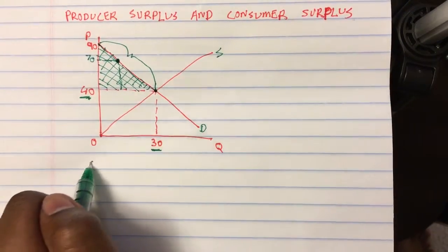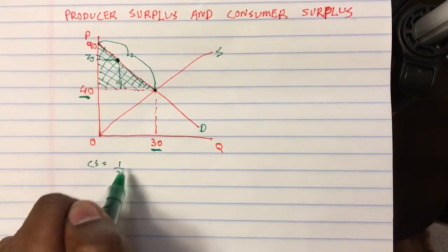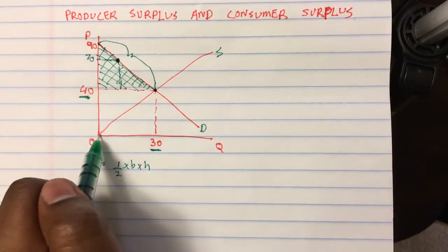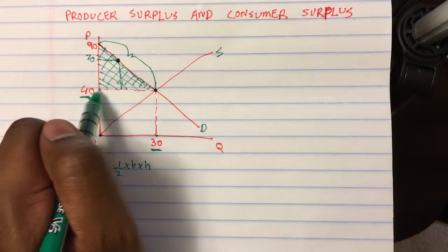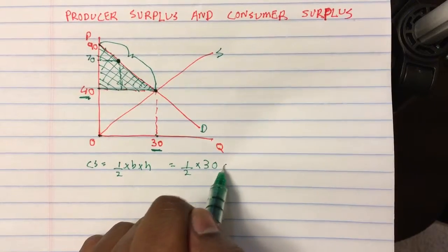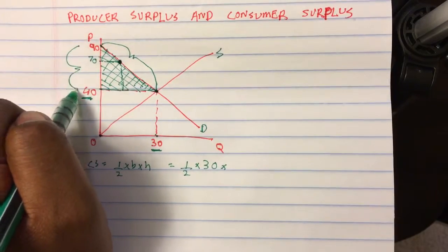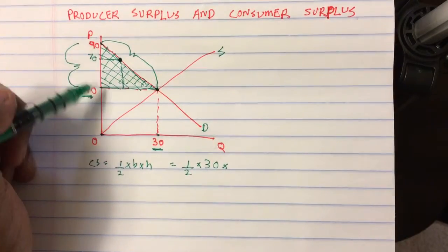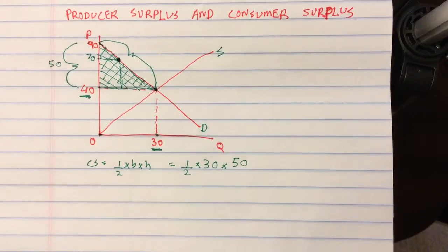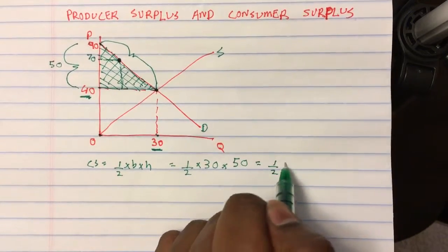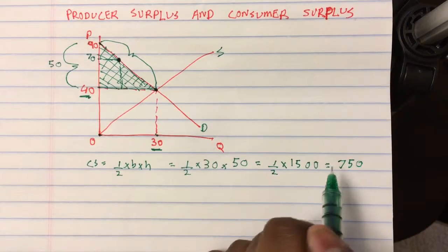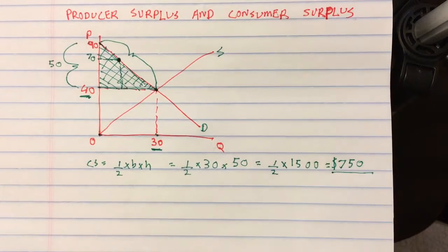So what is the area of the triangle? If we are calculating consumer surplus, it's half times base times height. So the base here is this length, which is 0 to 30. So this whole thing is the base. So it is half times 30 times the height. The height here is this length, so it's 90 minus 40, which is 50. So it comes out to be half times 1500, which is $750. So this is my consumer surplus.